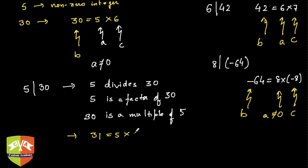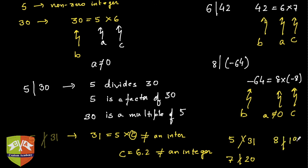Now c is not an integer here because if you see the division, it is 6.2. So c here is 6.2 but this is not an integer. Hence we say 5 doesn't divide 31. Similarly, 7 doesn't divide 20, 8 doesn't divide 19, and so on and so forth.